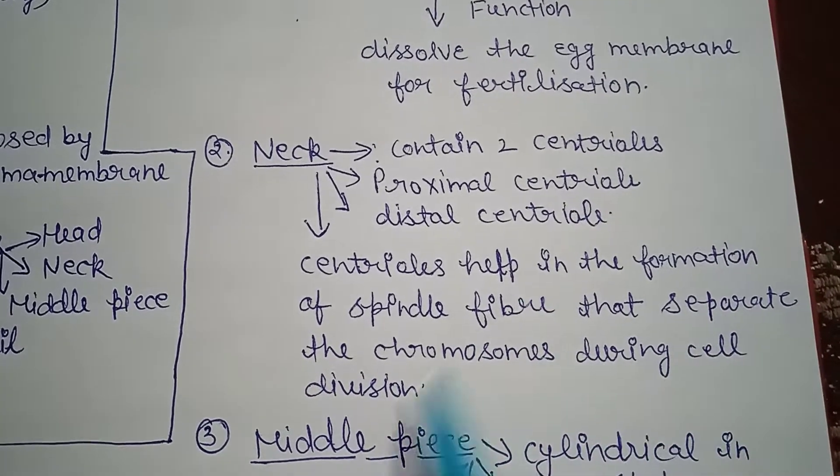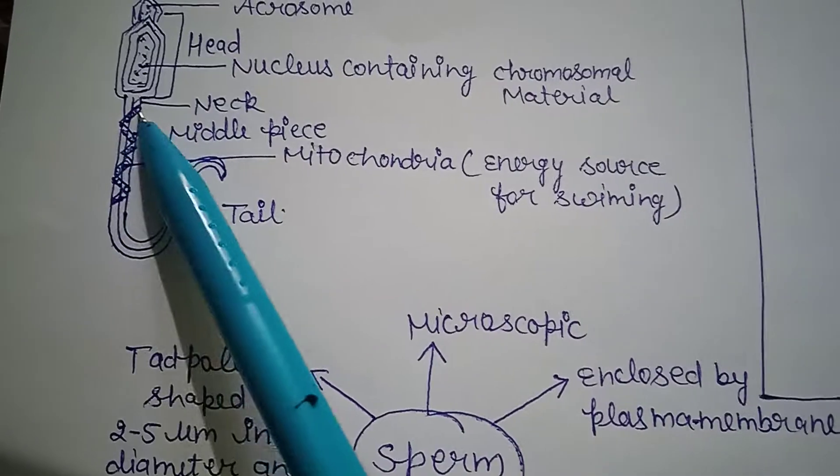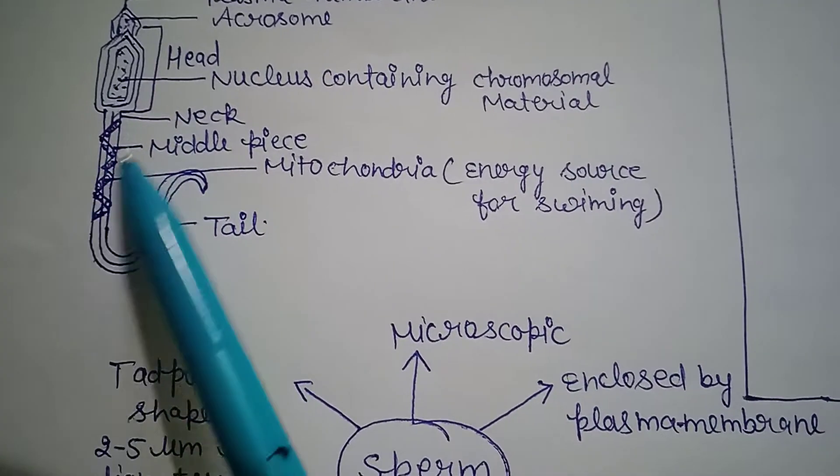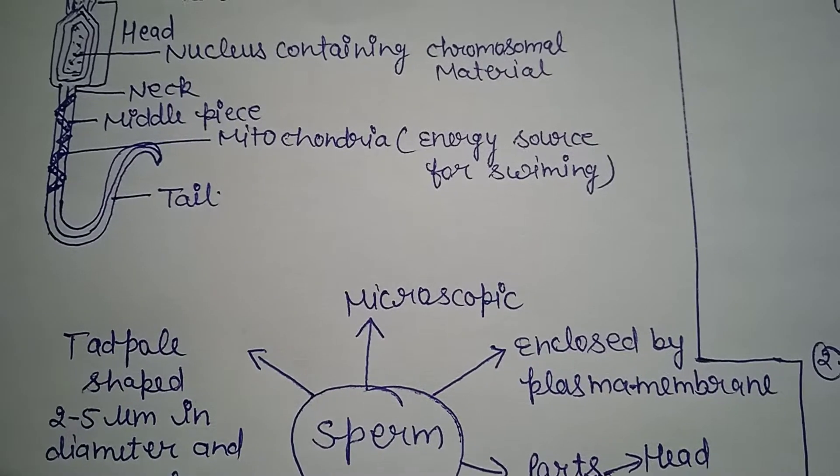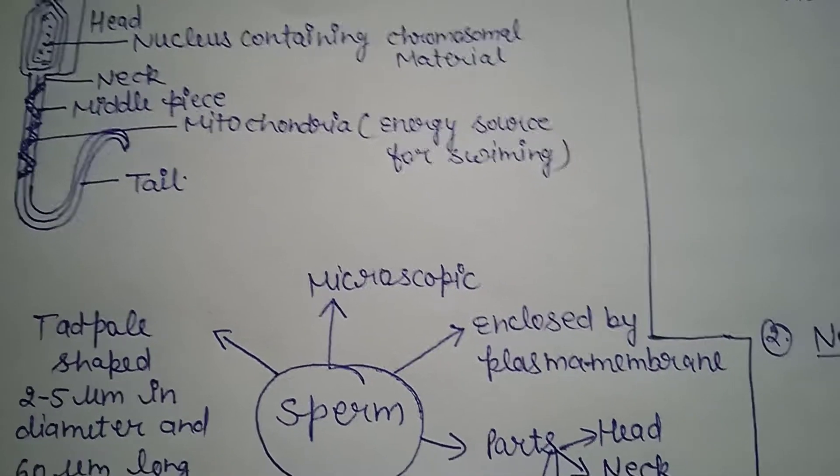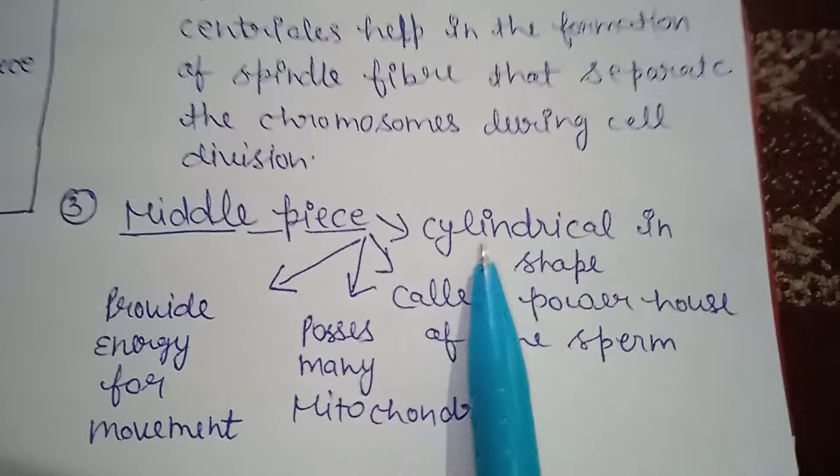Next part is middle piece. I have already shown you in the diagram, this is the middle piece which contains mitochondria. What is mitochondria? Mitochondria is the energy source for swimming. Middle piece is cylindrical in shape.